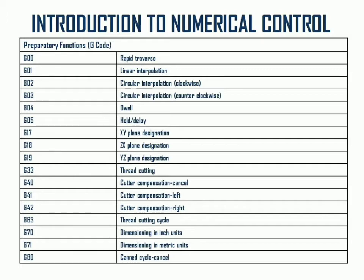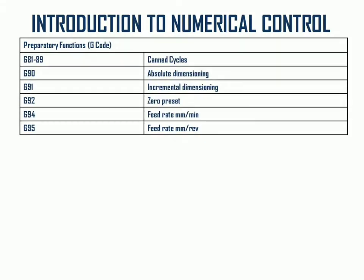G40 is cutter compensation cancel, G41 cutter compensation left, G42 cutter compensation right, G63 thread cutting cycle, G70 dimensioning in inches unit, G71 dimensioning in metric unit, G80 canned cycle cancel, G81 to G89 different types of canned cycles, G90 absolute dimensioning, G91 incremental dimensioning, G92 zero preset, and G94 feed rate in mm per minute.